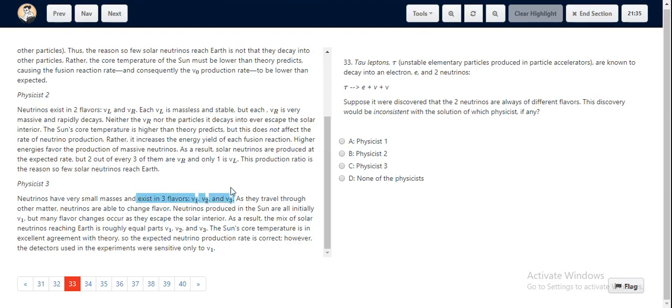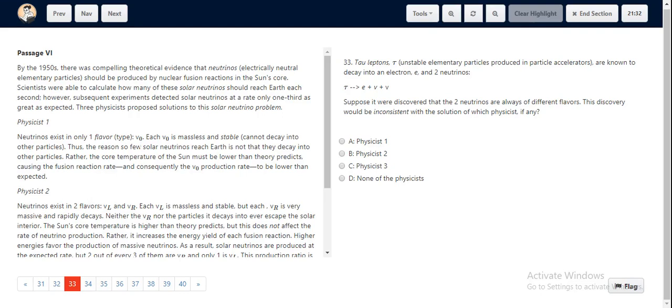The only physicist that has mentioned a single flavor is Physicist 1. Hence, this would be inconsistent with the solution that is provided of two neutrinos of different flavors. So, the correct option would be Physicist 1, which is option A.